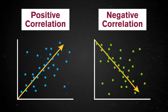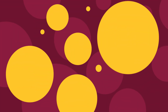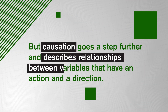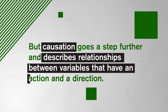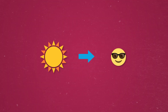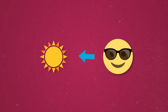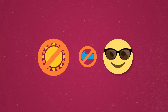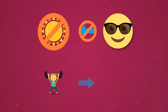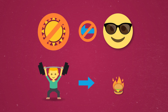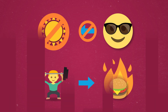Like the longer you spend working out in the morning, the less you sleep. But causation goes a step further and describes relationships between variables that have an action and a direction. If the value of one variable increases, it causes the second variable to increase, but not the other way. It's much bolder to say that one variable causes the other to change. In fact, working out and calorie burn aren't just correlated — working out causes us to burn more calories.